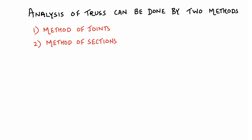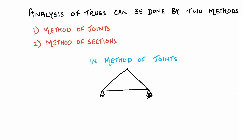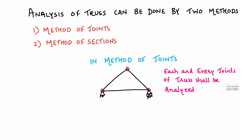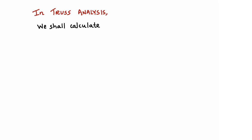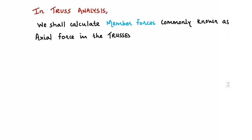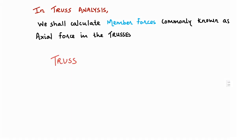In the method of joints, we have to consider all the joints — each and every joint will be taken into consideration when we analyze the truss. A free body diagram will be drawn for each joint. In truss analysis, what we calculate are the member forces, commonly known as the axial force in the trusses.